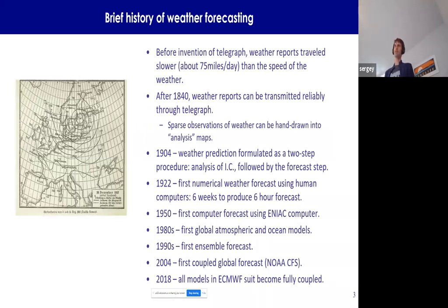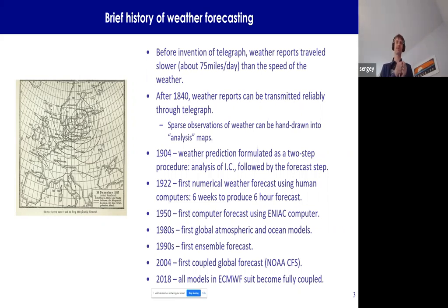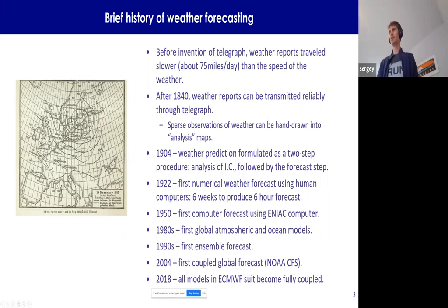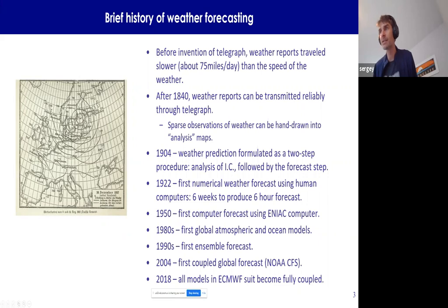The basis of data assimilation is the ability to communicate observations quickly. Before the telegraph, you couldn't observe the weather, carry it ahead of the weather, and deliver it to a different place, because you could only ride as fast as a horse — about 75 miles per day — and weather travels faster than that. In 1840, the telegraph was invented, and the first weather maps were created. This example from 1887 shows very few stations — Kyiv, Petersburg, Prague — and none in Italy or Spain. The observing network was very sparse.